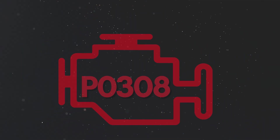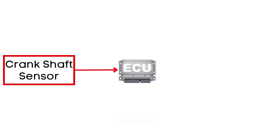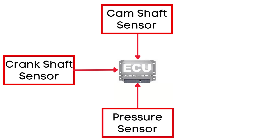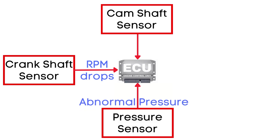Let's dive into why P0308 gets triggered. The Engine Control Unit, or ECU, monitors the signals from the Crankshaft Position Sensor, Camshaft Position Sensor, and Cylinder Pressure Sensor. These sensors provide real-time data about your engine's performance. When a misfire occurs in one or more cylinders, it causes the engine's RPM to drop abruptly. Simultaneously, the pressure inside the cylinder becomes abnormal. This sudden change in signals from the sensors is what the ECU reads as a misfire. The Camshaft Position Sensor helps the ECU determine which specific cylinder is experiencing the misfire.